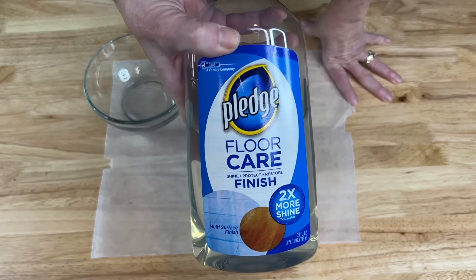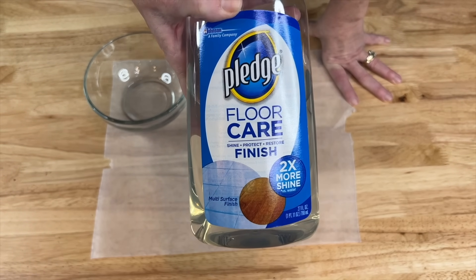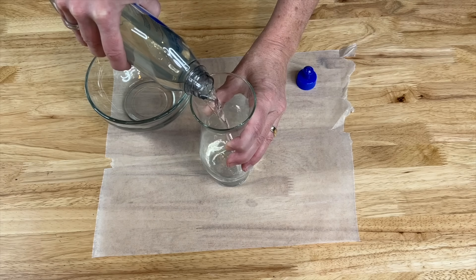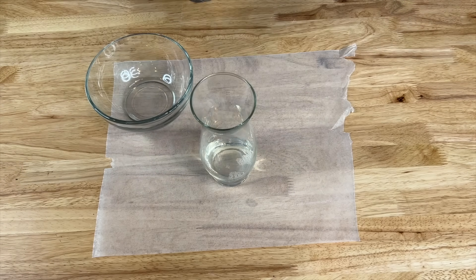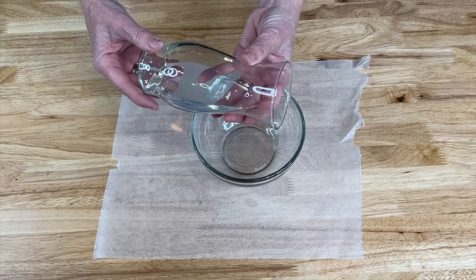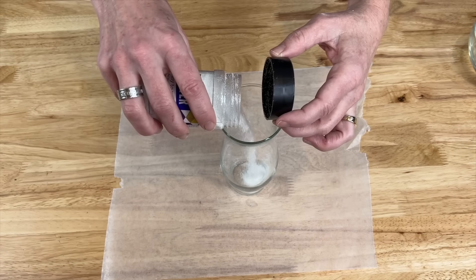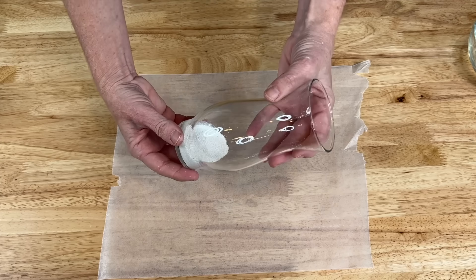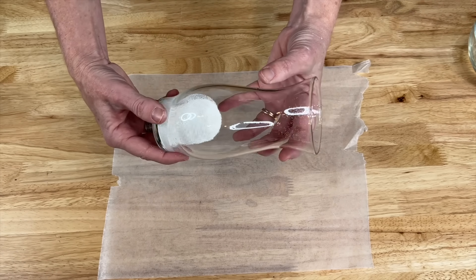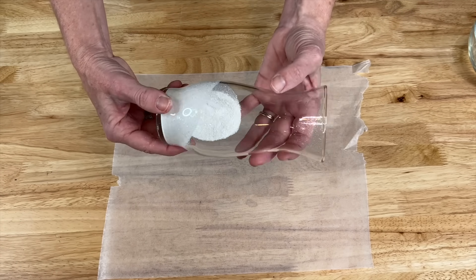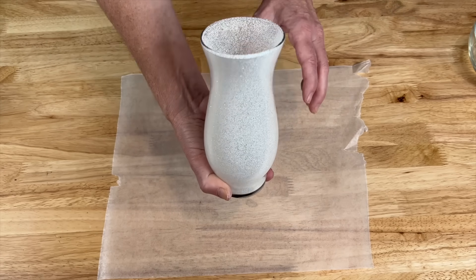For this next one, we're going to be using Pledge Floor Care Cleaner. Pour some of the Pledge Floor Cleaner into the glass base. Whirl the glass carefully so that it's all coated because I'm just going to use some snowy glitter and I'm going to dump a healthy amount in here. Now we start swirling all the way around and I let it dry completely.